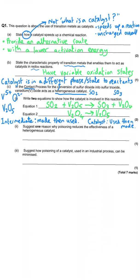The only thing missing is: how can V₂O₄ turn into V₂O₅? It needs to react with oxygen — that's the final chemical to include. Since we only need to add one oxygen atom in equation two, we need two of V₂O₄ and two of V₂O₅ to balance the equation.